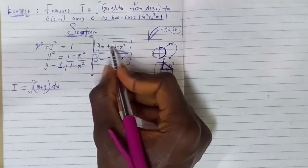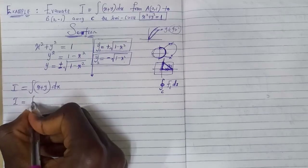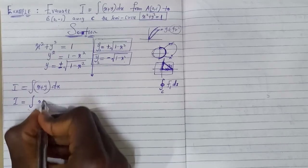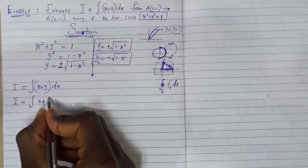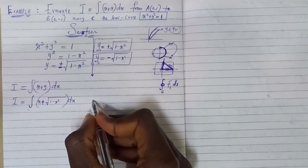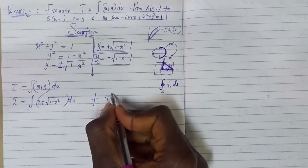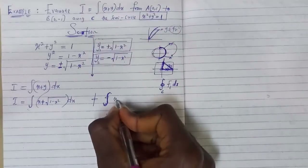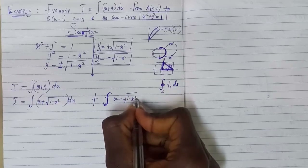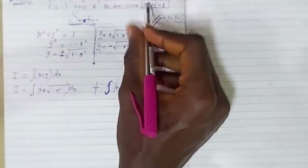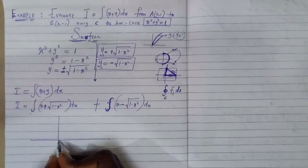We take each part one by one. For the first part, substituting the positive y, we get ∫(x + √(1 − x²)) dx, and for the second part, substituting the negative y, we get ∫(x − √(1 − x²)) dx. To proceed, we need to sketch the problem. We have the y-axis and x-axis, and since the equation forms a semi-circle, we need to identify our key points.